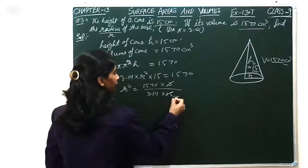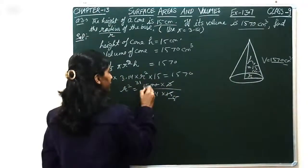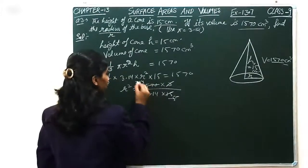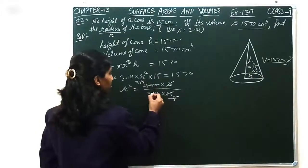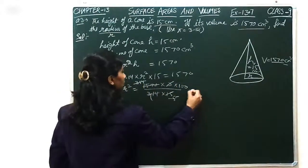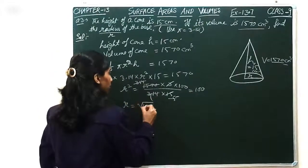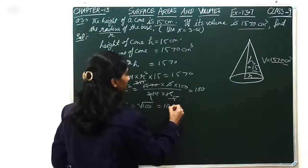This is 3, 5 is a 15. So it is equal to 100. So r ki value, under root 100. This is 10 cm.